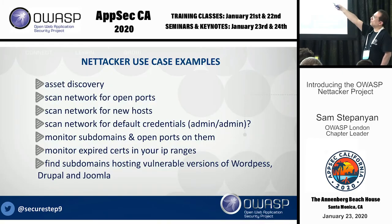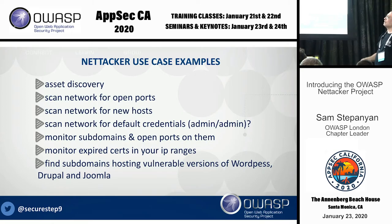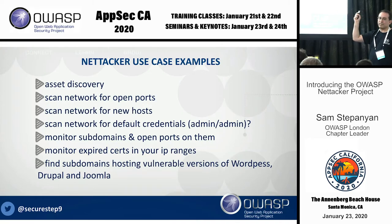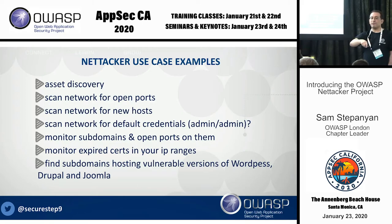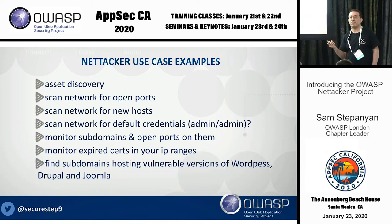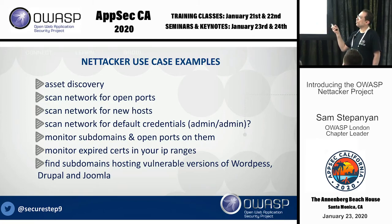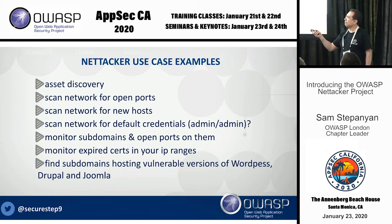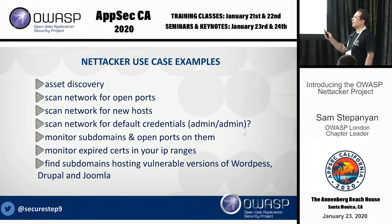OWASP NetAttacker's top use cases: asset discovery — what do you own, what do you have on your network. Scan for open ports, new hosts, default credentials — how many IoT cameras or ring doorbells have admin/admin as default credentials, scan thousands of them in one minute. Monitor subdomains and open ports, monitor expired certificates across IP address ranges, find subdomains hosting vulnerable versions of WordPress, Drupal, and Joomla.